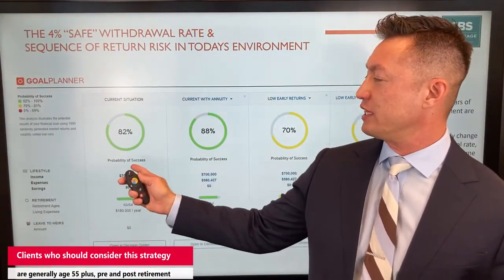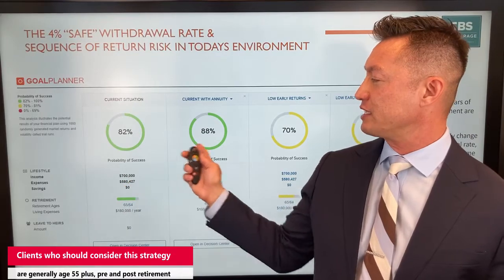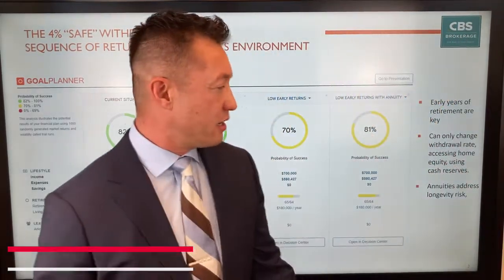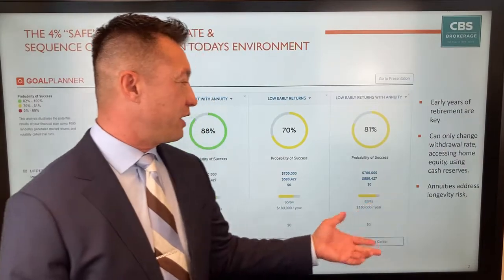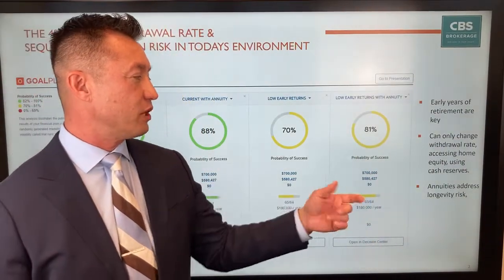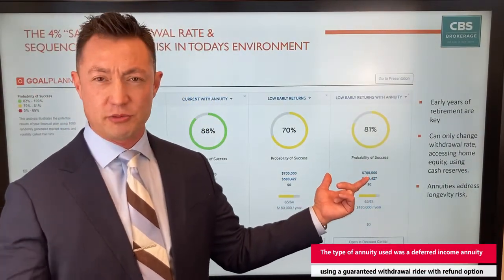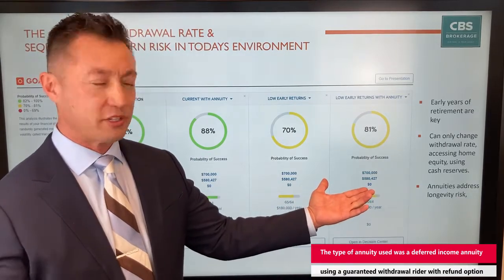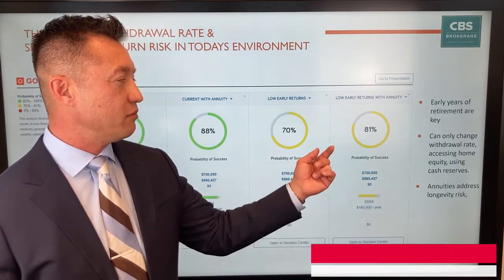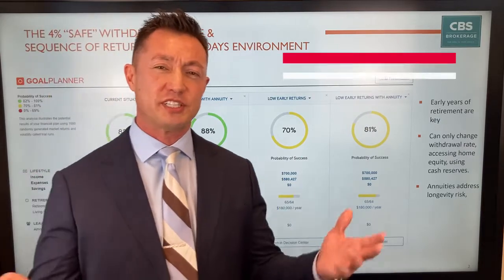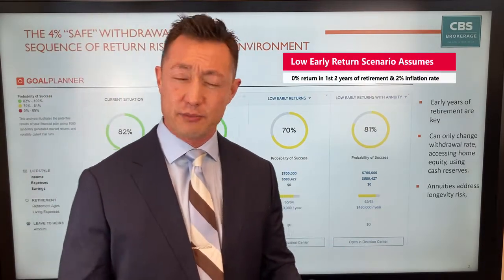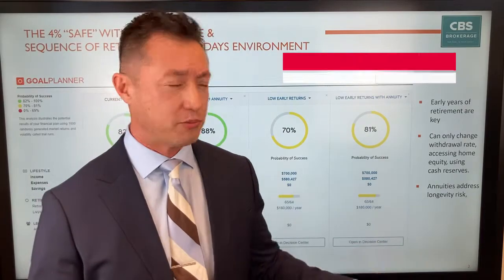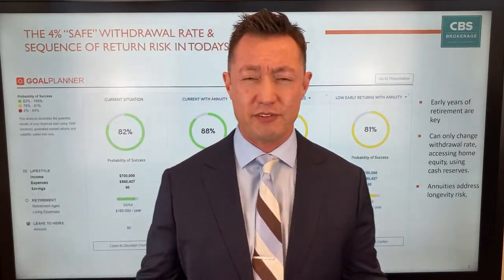Simulating this into eMoney, we found that we got a 6% improvement in the probability of success in retirement, and an 11% improvement under a low-return scenario — a sequence-of-returns risk scenario — which is obviously one of the greatest threats in retirement. What's so exciting about that is that there are so few ways to improve the probability of success in retirement without looking at the client's behaviors.